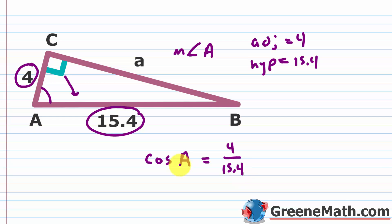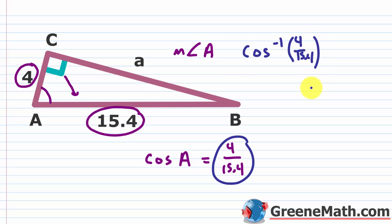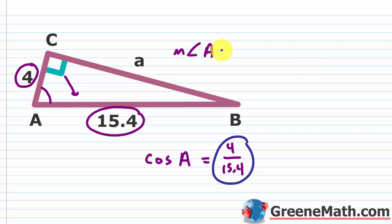We need to solve for angle A, so we use the inverse cosine function. Taking the inverse cosine of 4 over 15.4 gives us a measure of approximately 74.9 degrees. This is an approximation rounded to the nearest tenth.